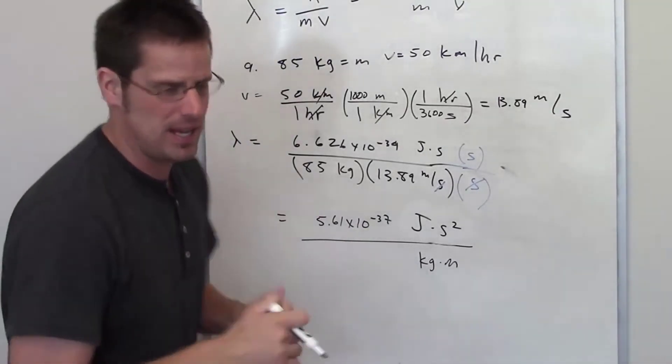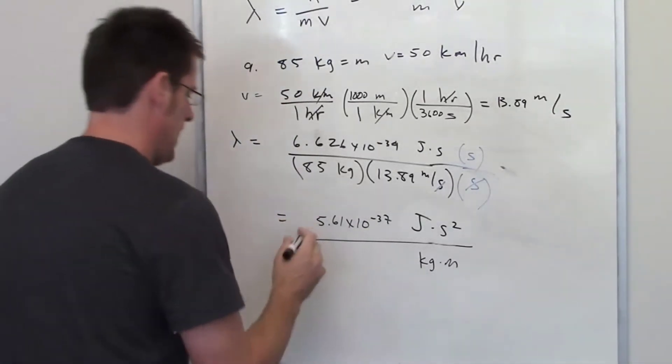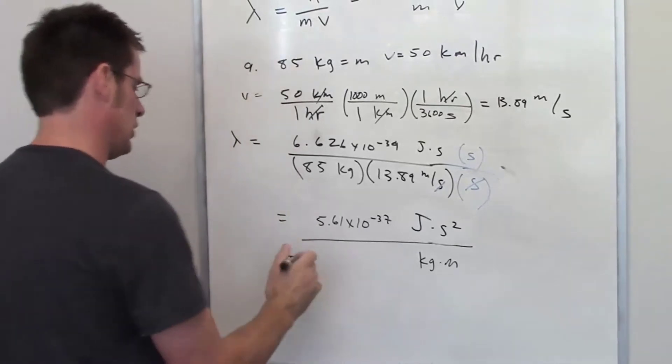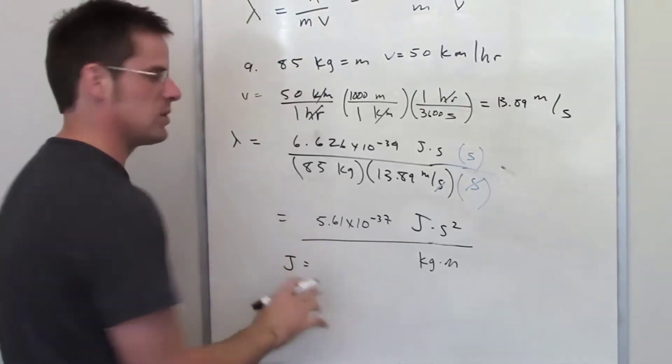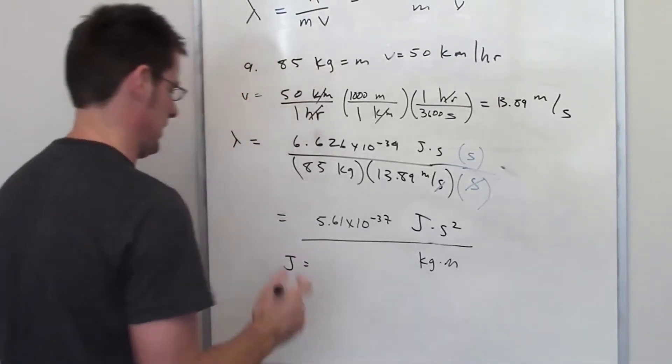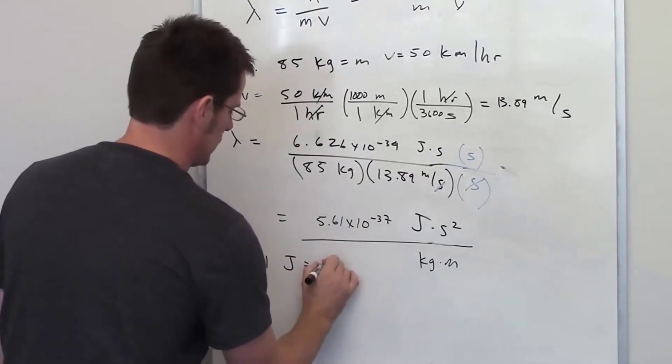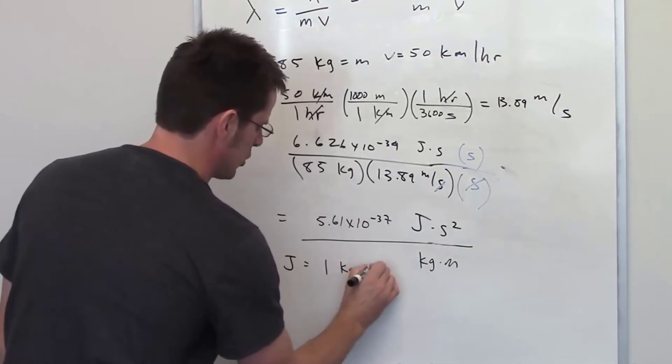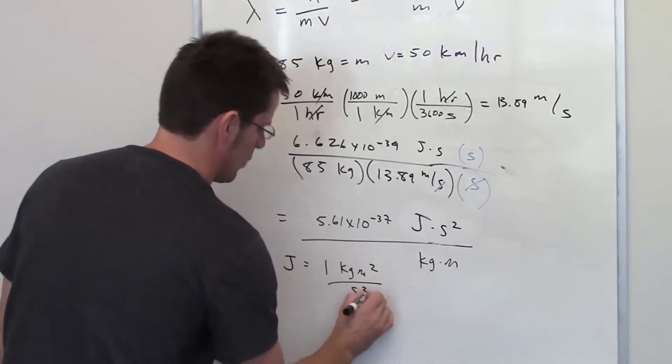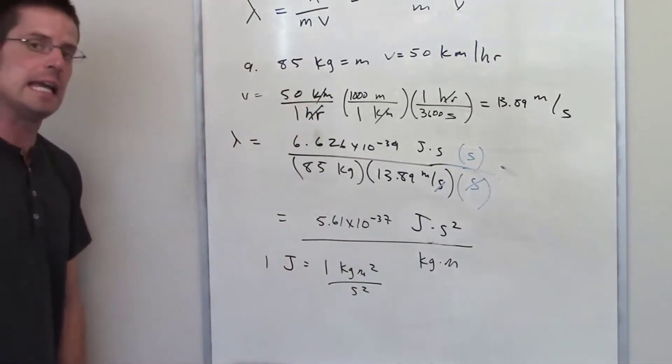There's a detail I have to show you, and that is that a joule is one of those units that's a combination of a couple of different units. If you look up one joule, one joule is actually equal to one kilogram meter squared per second squared. That's what a joule actually is.